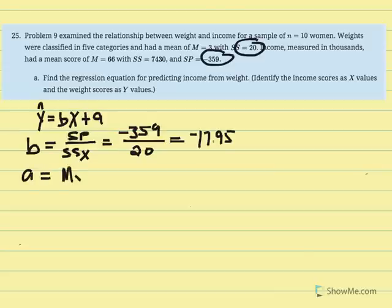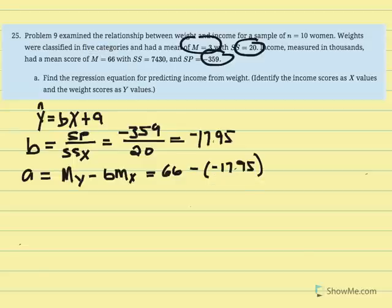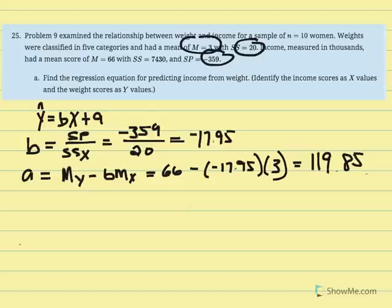Now we can solve for the y-intercept. The equation is the mean of y minus our slope multiplied by the mean of x. Our mean of y is equal to 66 — reported in thousands of dollars — minus our slope, negative 17.95, multiplied by the mean of x, which is 3. Recognize that there is a negative outside of the parentheses, so be conscientious of that. We should get a y-intercept equal to 119.85.